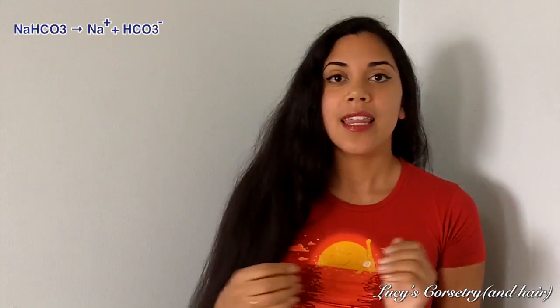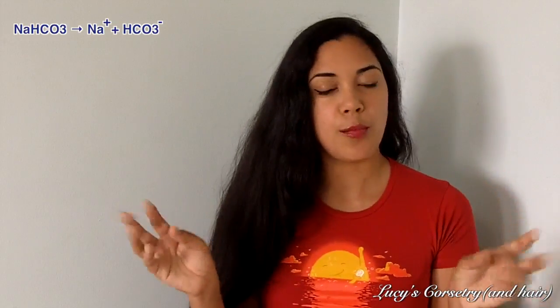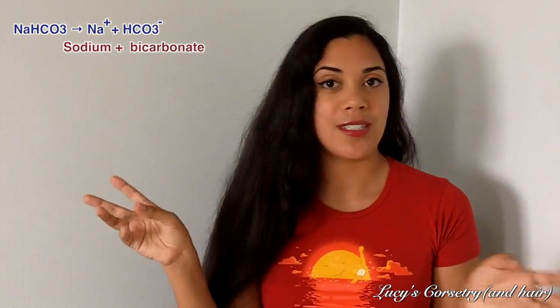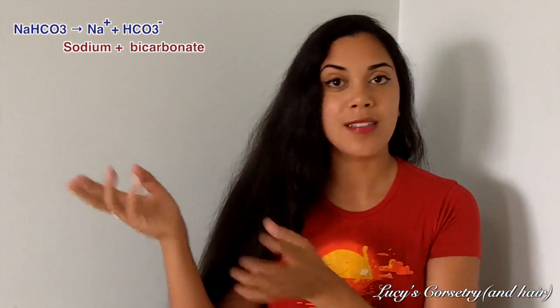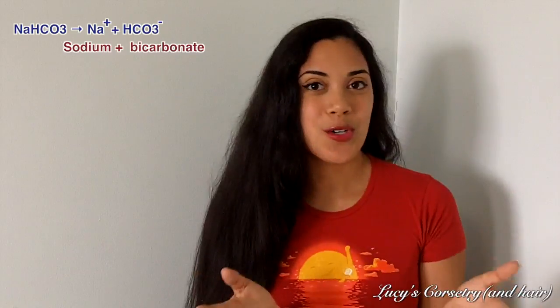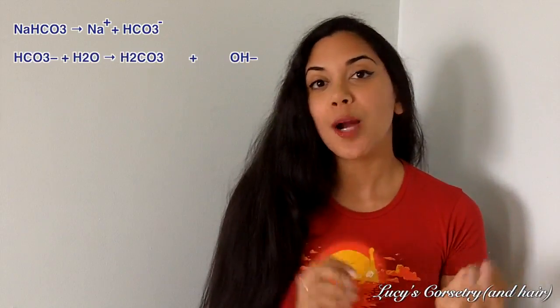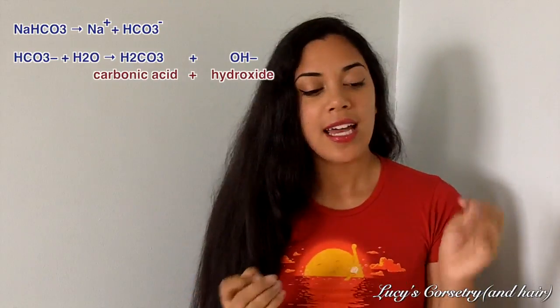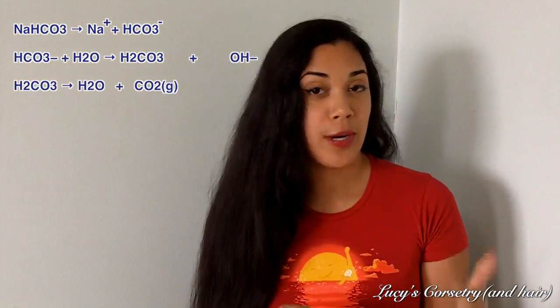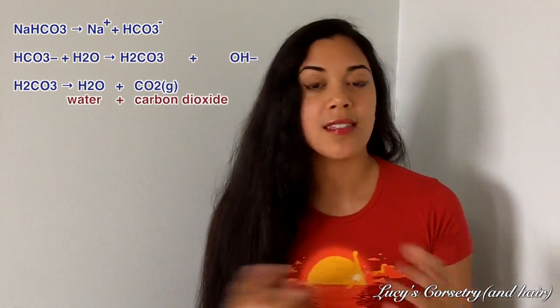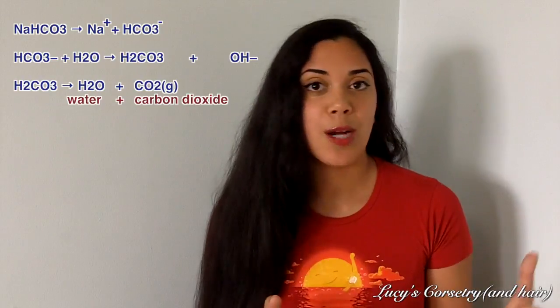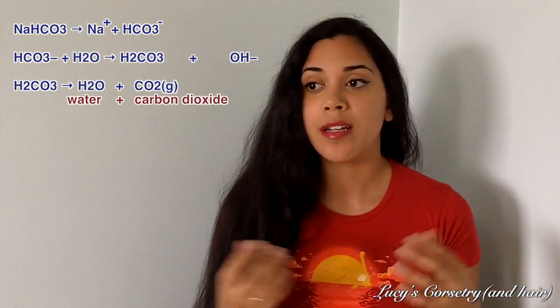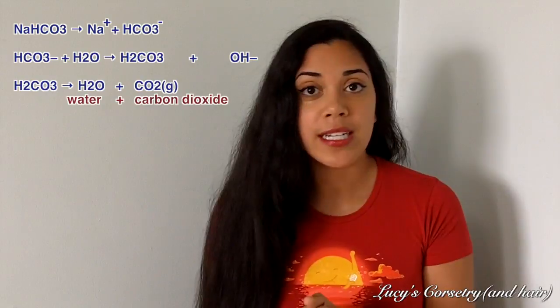When you dissolve sodium bicarbonate in water, which is pH neutral, it breaks down initially into its salt components. The sodium ion hangs around until it finds something negatively charged to bond with. The carbonate can break down further into carbonic acid and hydroxide. That carbonic acid can then break down into carbon dioxide and water — the same CO₂ you breathe out and find in carbonated drinks.